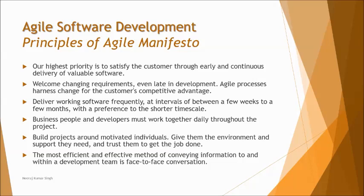Principle three: deliver working software frequently, at intervals of a few weeks to a few months — we have short-term delivery cycles, unlike traditional approaches where you may wait six or seven months for the first deliverable. Typically the cycle period is around two weeks. Principle four: business people and developers must work together daily throughout the project, enabling the better interaction described in the agile manifesto. Build projects around motivated individuals who know what they need to do and deliver with commitment.